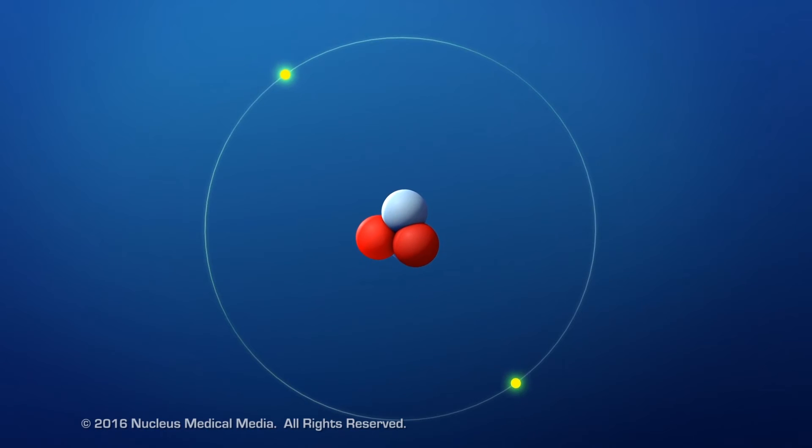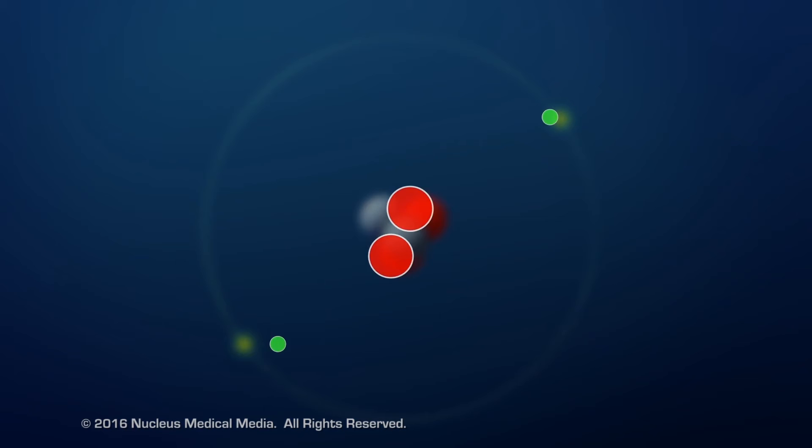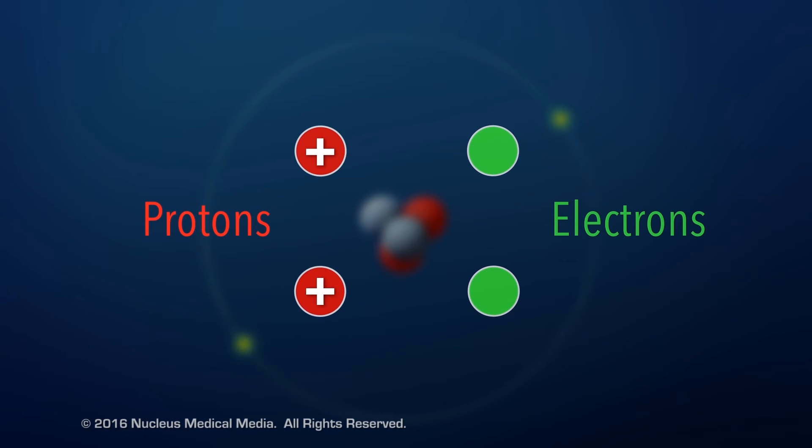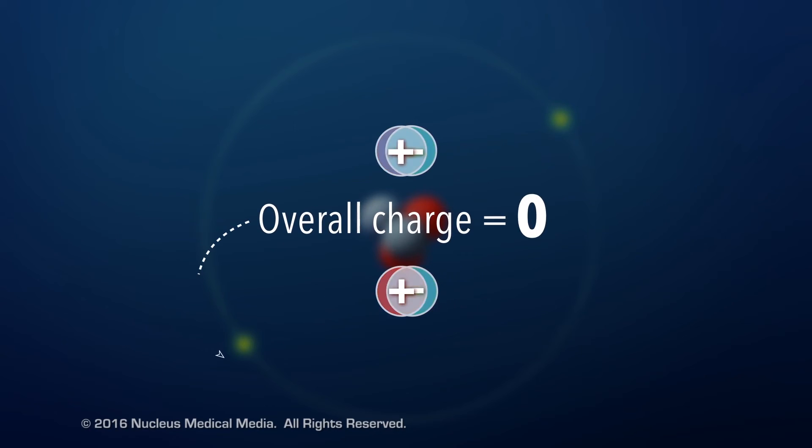Notice that neutral atoms contain equal numbers of protons and electrons. This means that the positive charge of the protons balances out the negative charge of the electrons, making the atom electrically neutral.